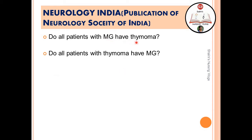Do all patients with MG have thymoma, and do all patients with thymoma have MG? The same study found that 10 to 20 percent of patients with MG have thymoma, and 20 to 40 percent of patients with thymoma have myasthenia gravis.